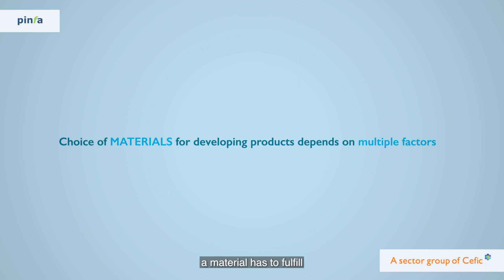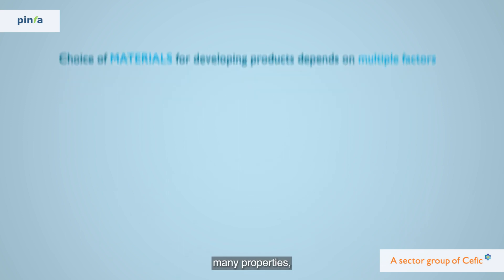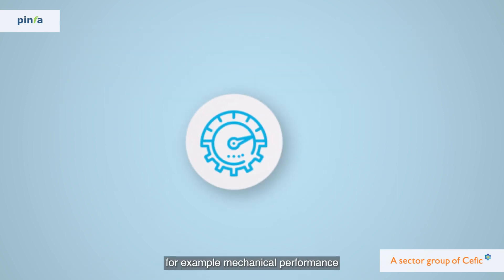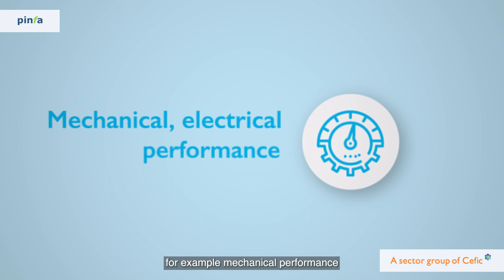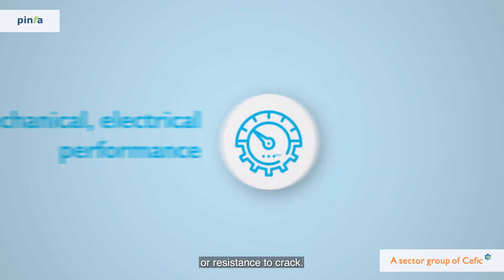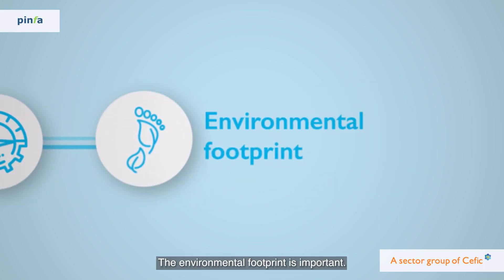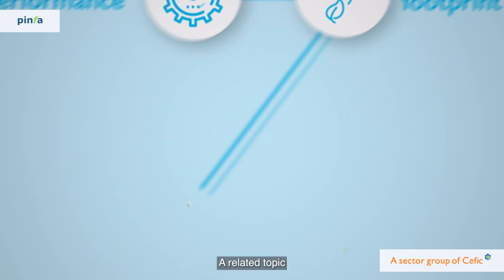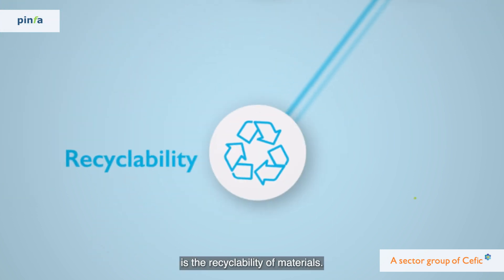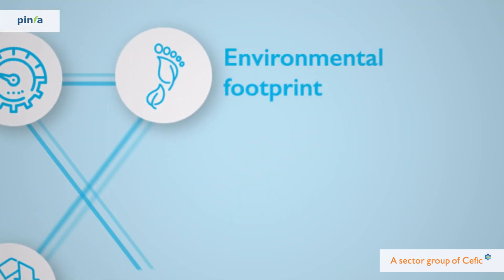A material has to fulfil many properties. For example, mechanical performance like a certain stiffness or resistance to crack. The environmental footprint is important, and a related topic is the recyclability of materials.